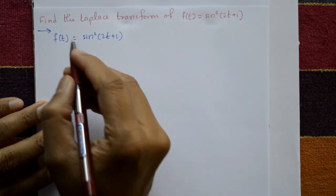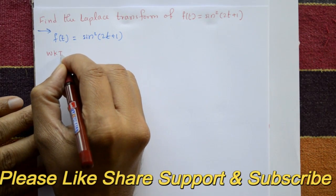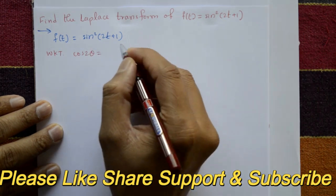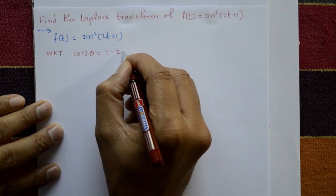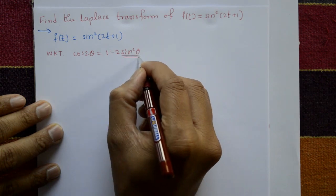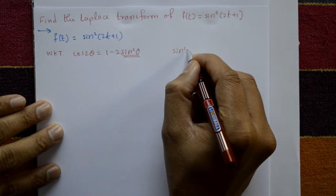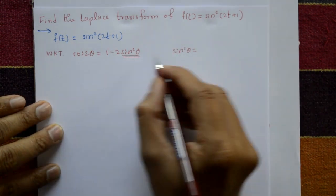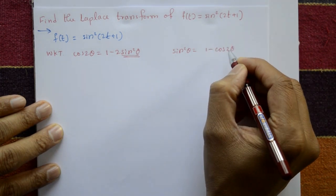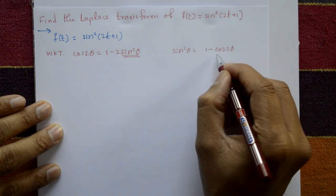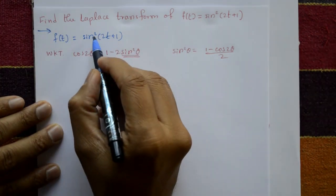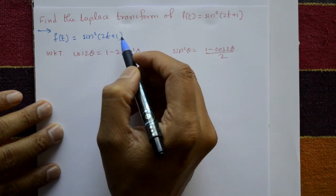We use the standard formula: cos(2θ) = 1 - 2sin²(θ). Rearranging for sin²(θ), we get sin²(θ) = (1 - cos(2θ)) / 2. We require only sin²(θ), so we interchange and divide by 2.